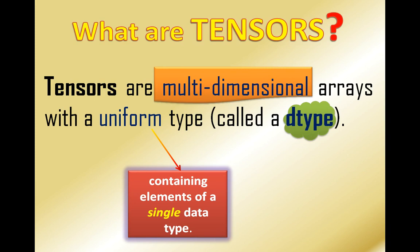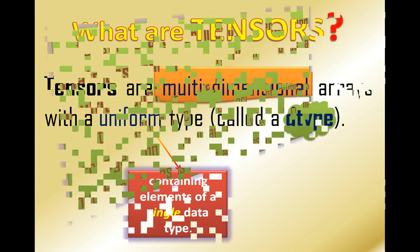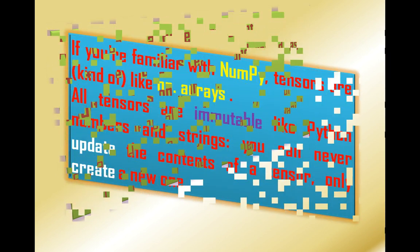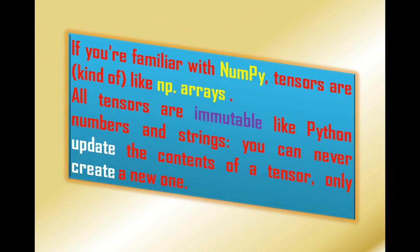Tensors are multidimensional arrays with a uniform type. Uniform type means containing elements of a single data type, called a dtype, where D stands for data. A tensor is a generalization of vectors and matrices and is easily understood as a multidimensional array, or an array of numbers arranged on a regular grid with a variable number of axes. If you are familiar with NumPy, then tensors are just like NumPy arrays.